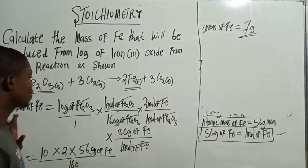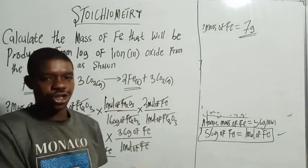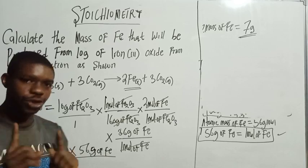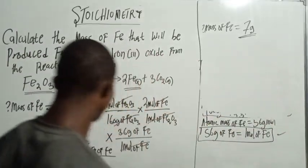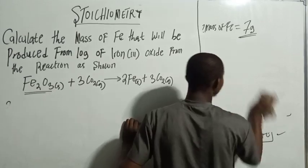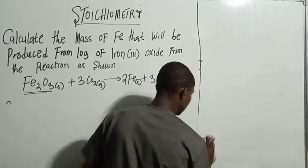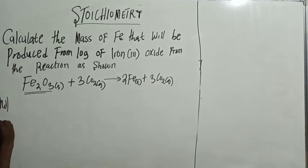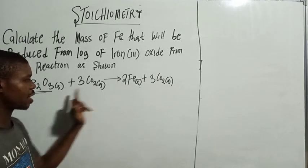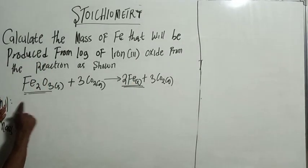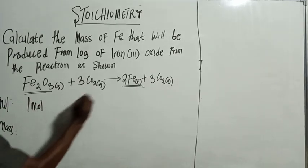That is the dimensional analysis method. I'm now going to show you the next method, which I believe is the standard method and faster. However, as a chemistry student you must understand both methods. So let's move to the second method.